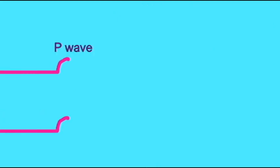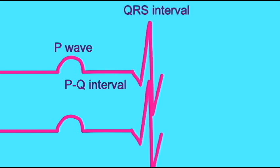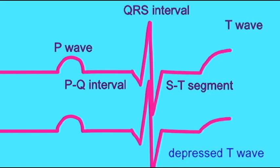The T wave is flatter when insufficient oxygen levels are reaching the heart. It can be elevated with a high potassium level in the blood.